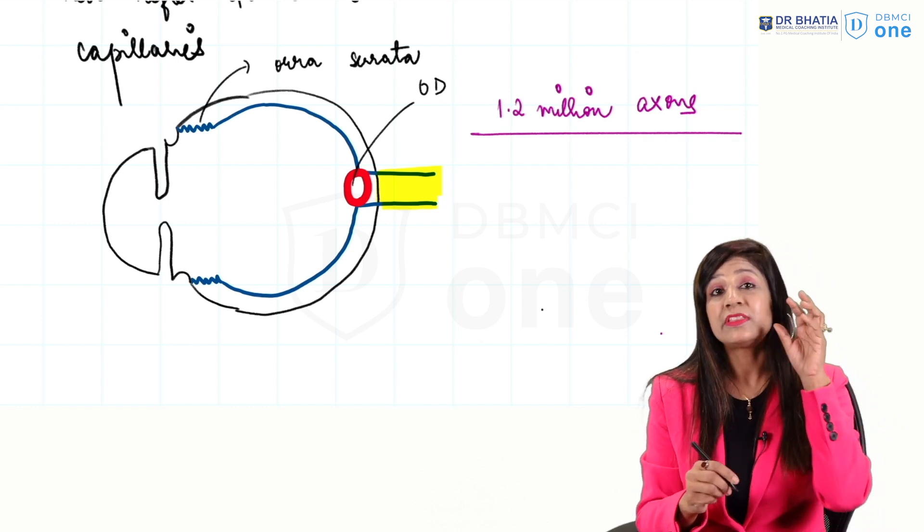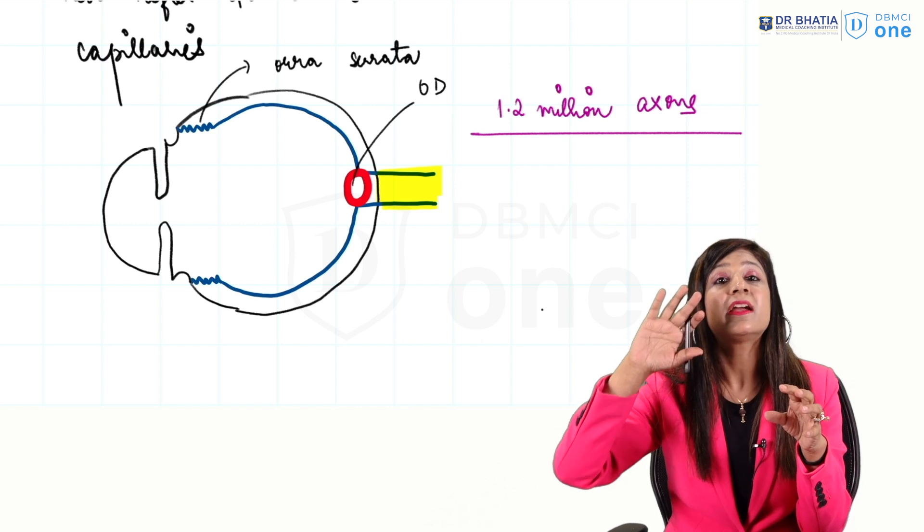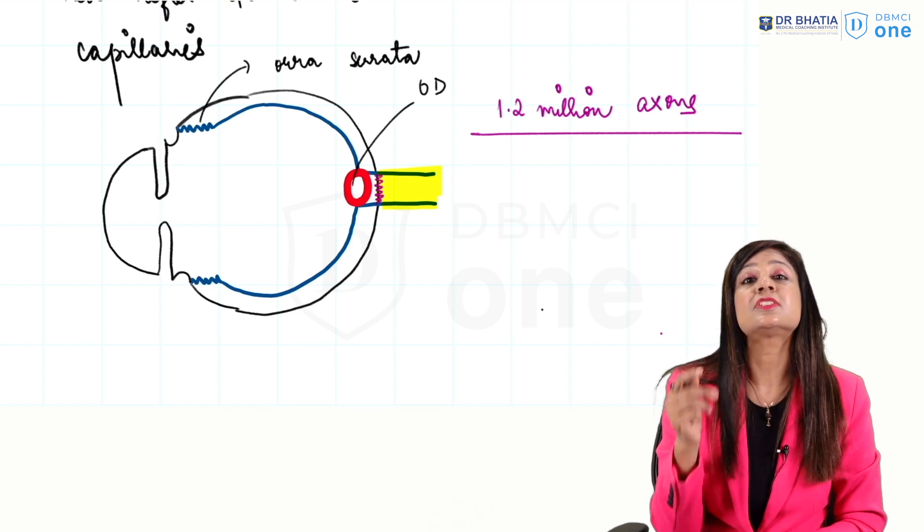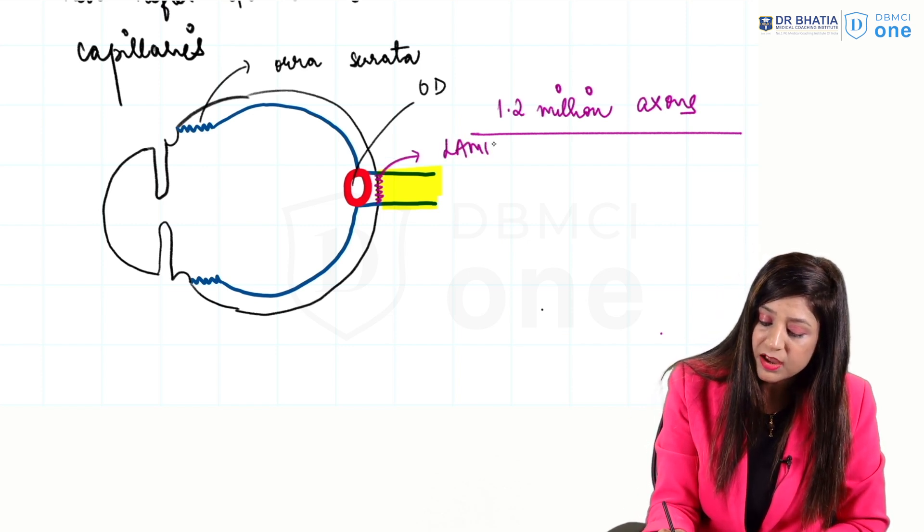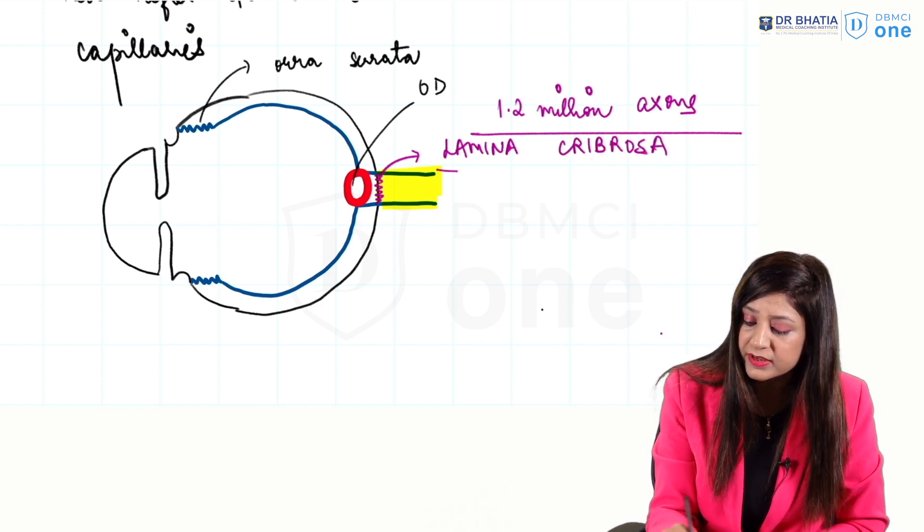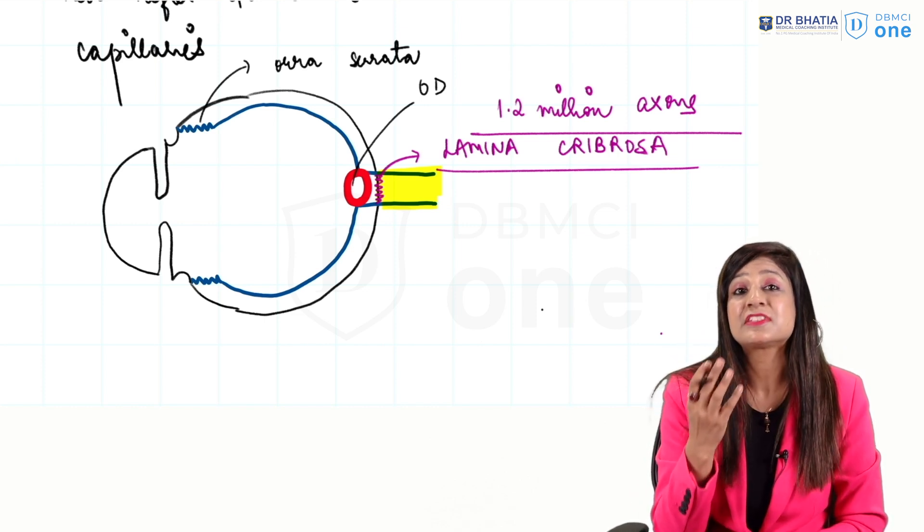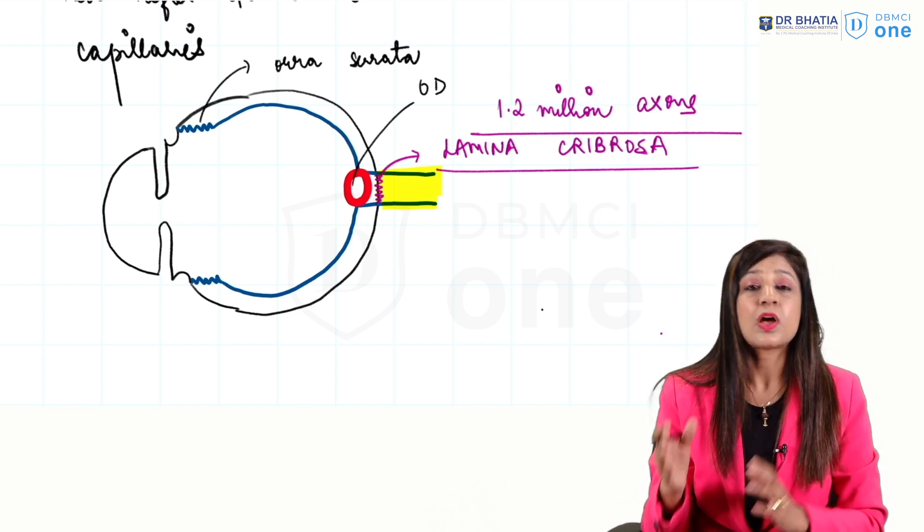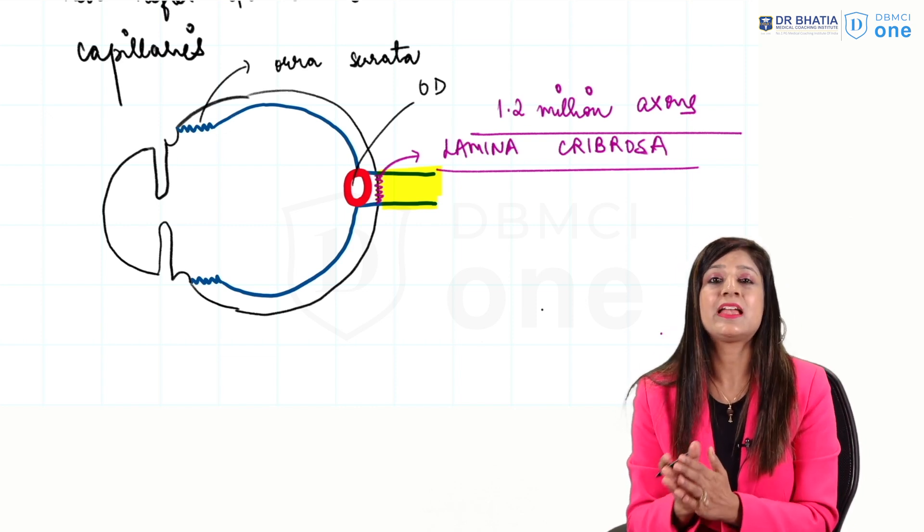The optic nerve will pierce the sclera and make 1.2 million holes or pores. This portion of the sclera through which the optic nerve is coming out is called lamina cribrosa. Lamina means layer, cribrosa means we will have cribriform appearance or sieve-like appearance through which the optic nerve fibers are coming out. I hope now the extent of optic nerve and the concept of lamina cribrosa is very clear.